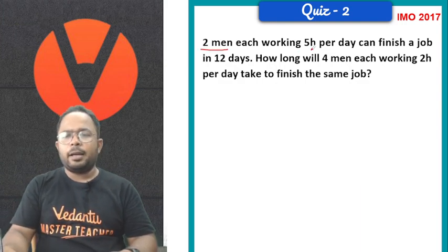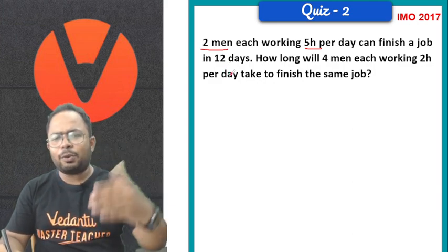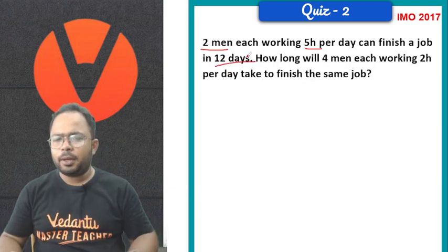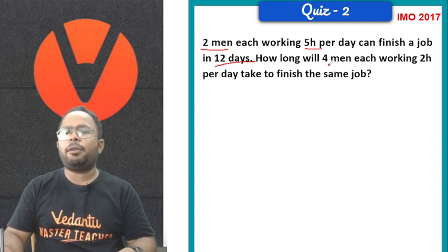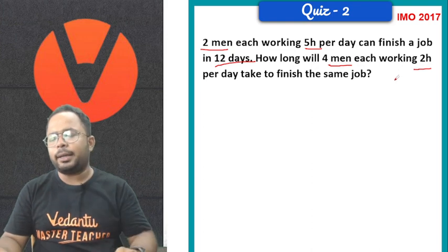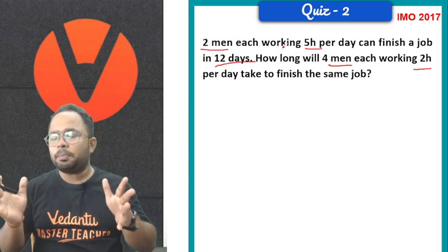So, it says two men is working 5 hours per day. Means somewhere in a whole day, these two men is contributing their 10 hours of work. And if they do that 10 hours of work continuously for next 12 days, the work will be done. Now how many days it will take if the same job is being done by four men and they are contributing only two hours a day? That means they are contributing eight hours in a day.